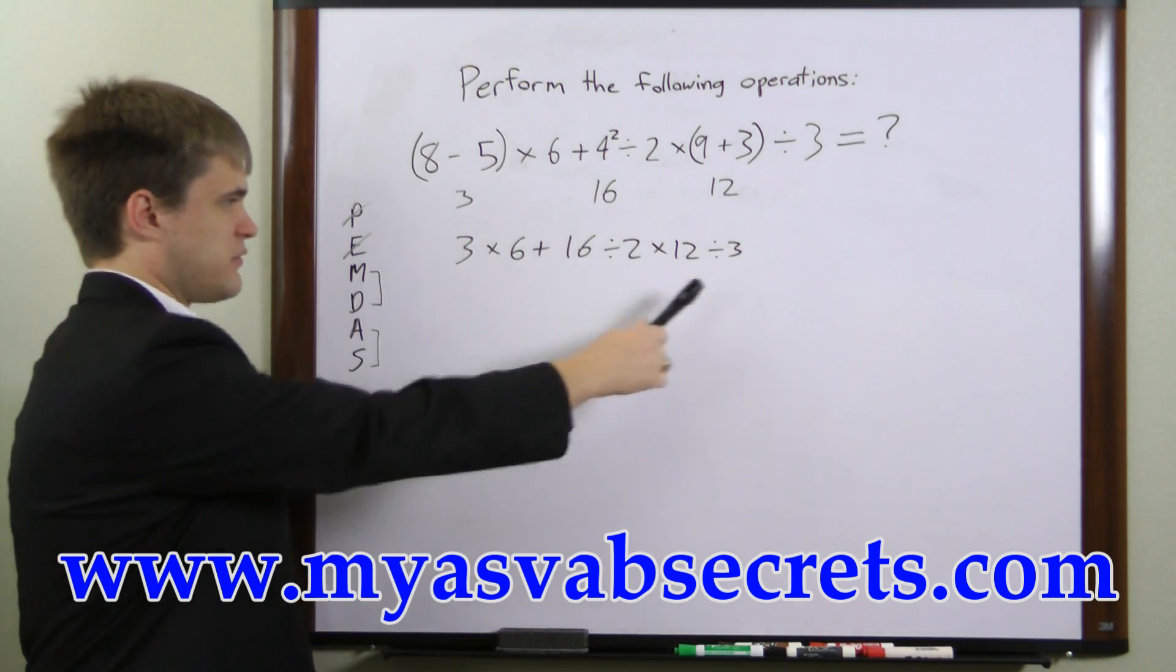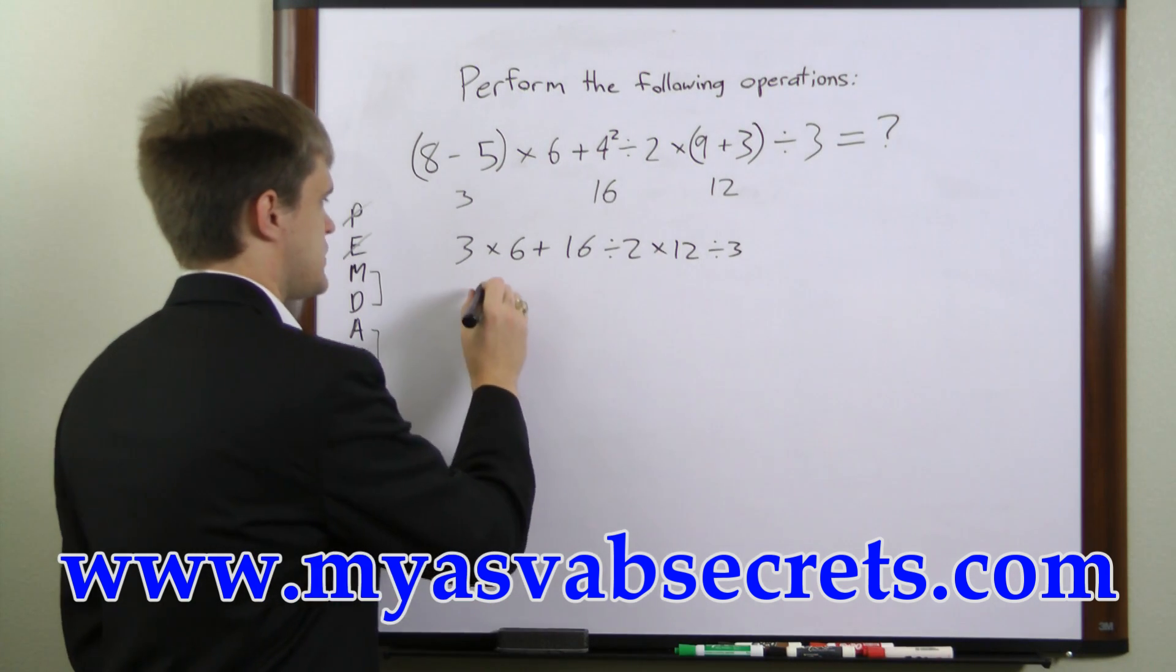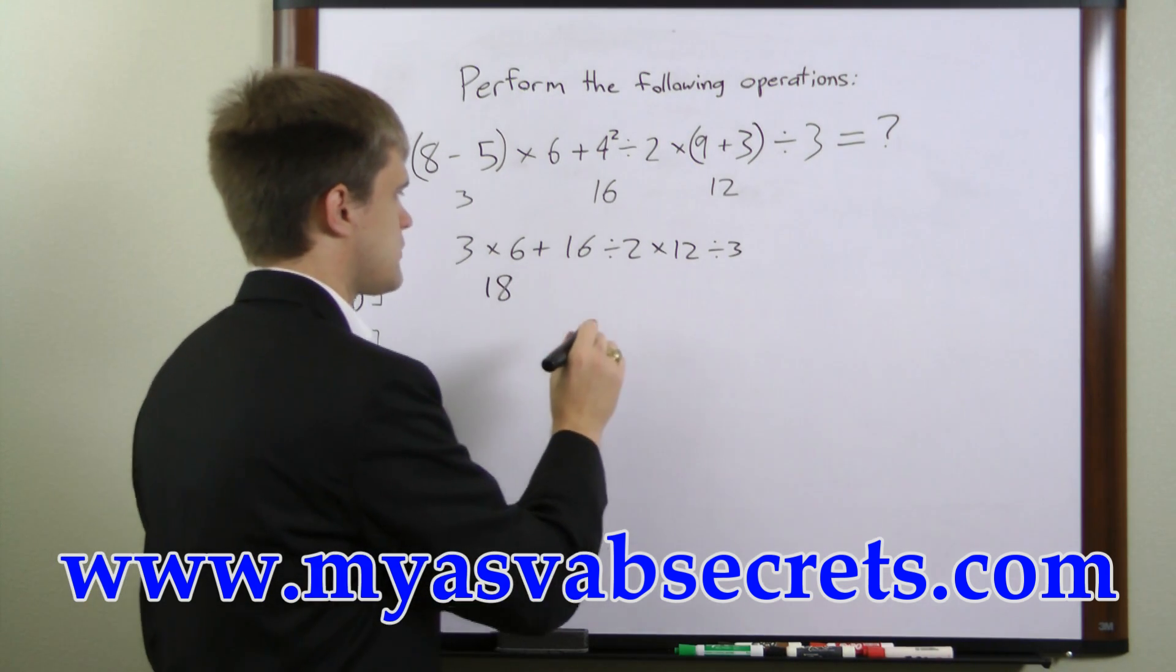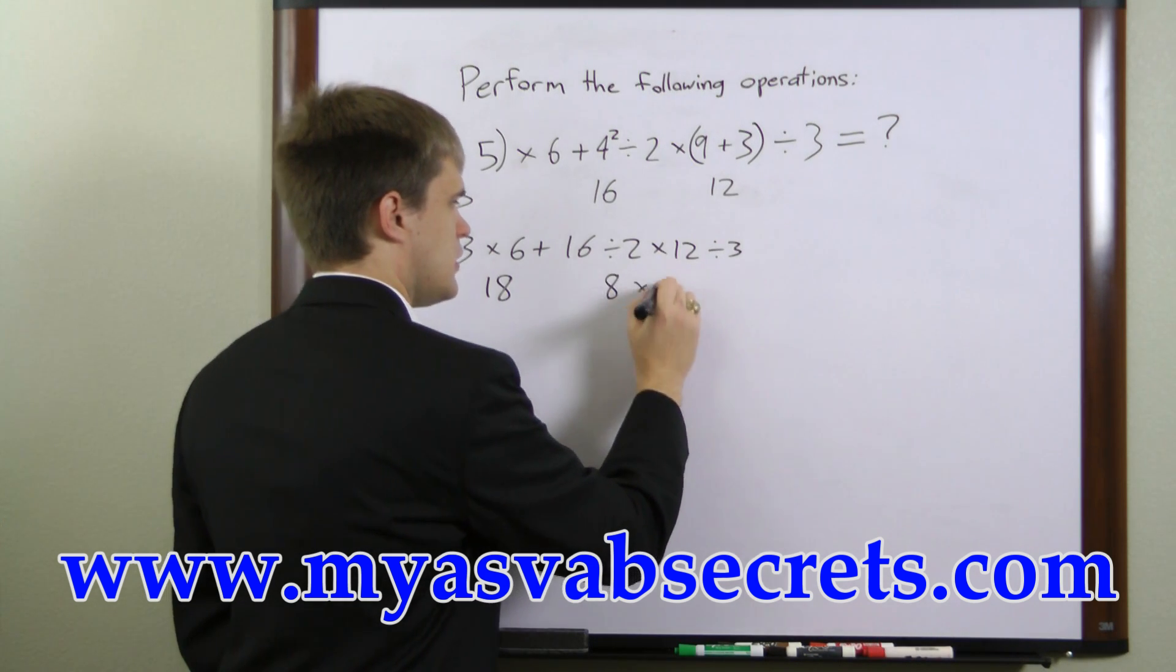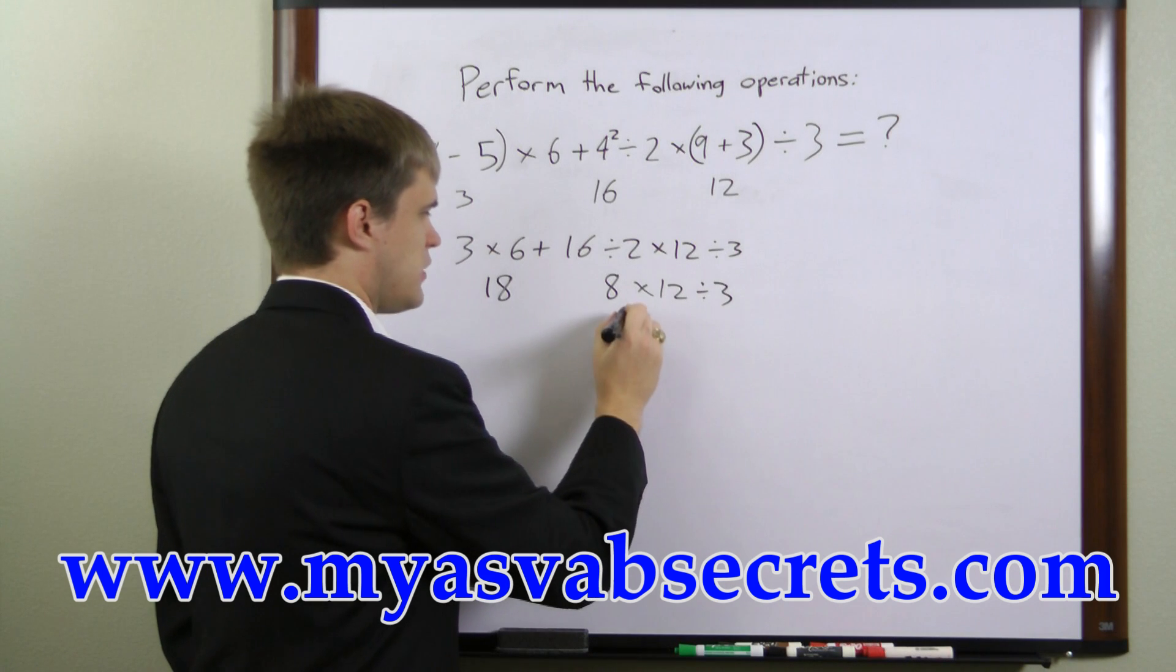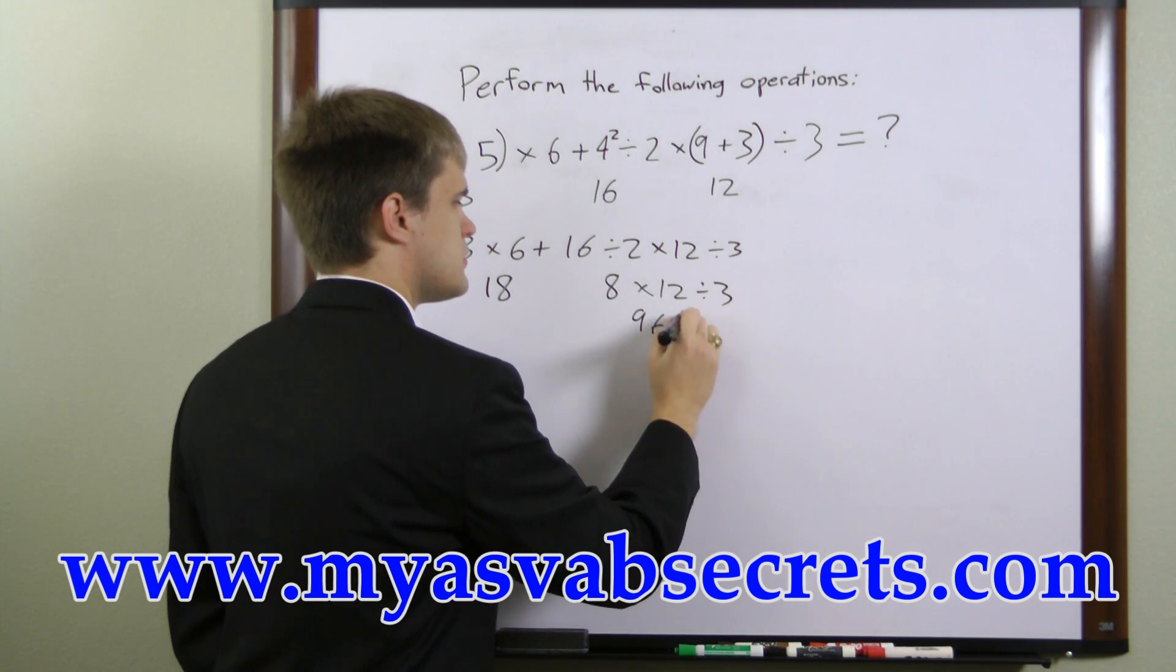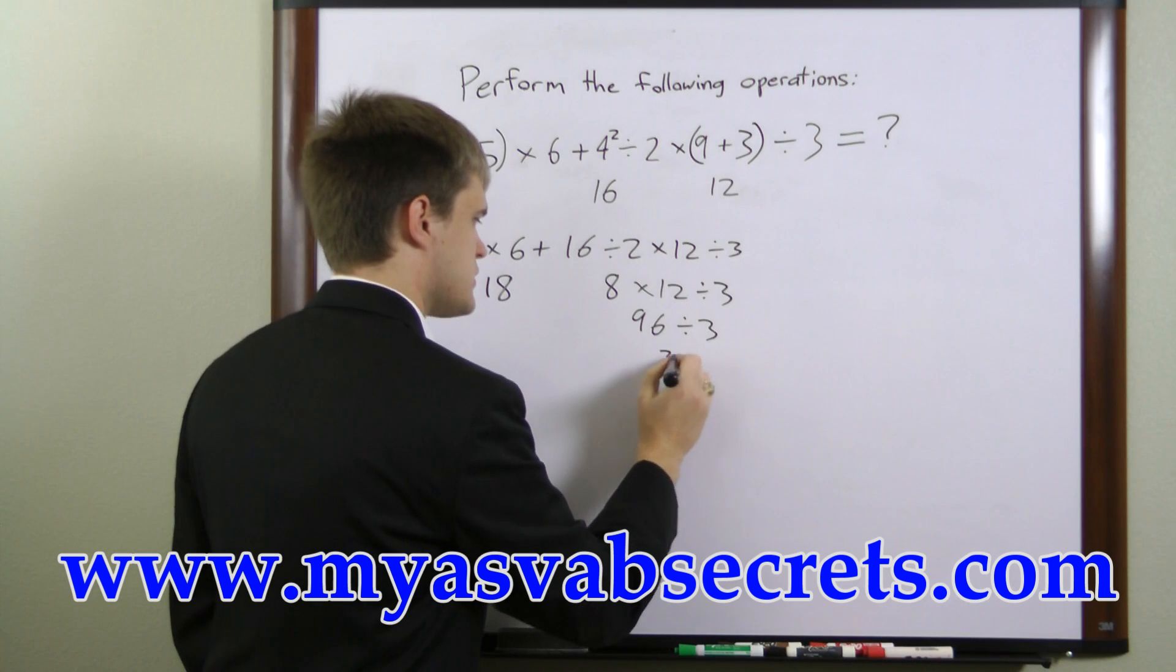Now we'll work from left to right on multiplication and division. 3 times 6 is 18. 16 divided by 2 is 8. I'll rewrite the rest of this. 8 times 12 is 96. 96 divided by 3 is 32.